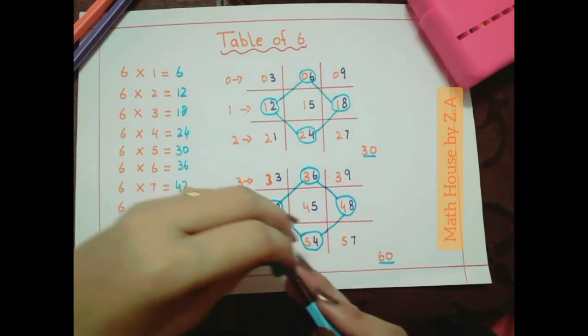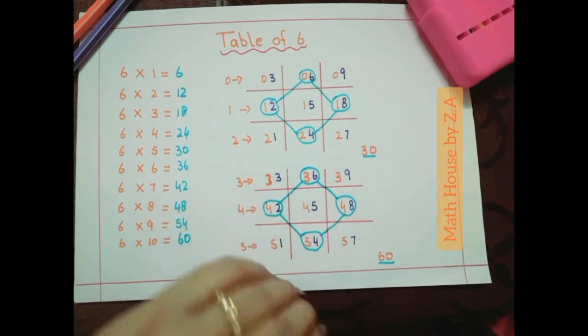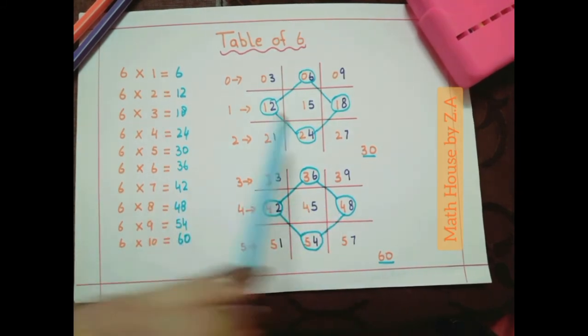Table is complete. You can easily write the table of 6 by using this pattern.